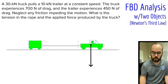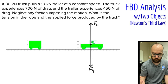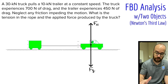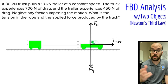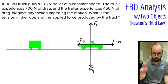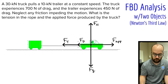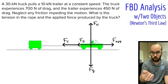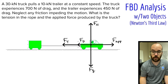Let's start with the truck. We have a gravitational force pulling down, a normal force from the road holding the truck up, and an applied force to the right because the truck's engine is on. There are also two forces impeding the truck's motion: the drag force to the left, since the truck is moving rightward through air particles, and the tension force from the rope pulling backward or leftward on the truck. Those are four forces acting on the truck.